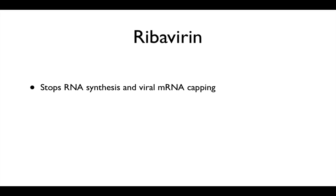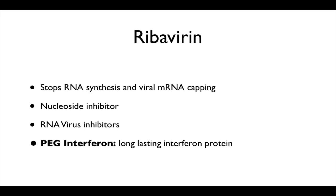For treatments, the key one to be aware of is ribavirin, which stops RNA synthesis and viral mRNA capping — it is a nucleoside inhibitor that inhibits RNA viruses. PEG interferon is also important: interferon is a protein the body makes naturally against viruses, working in fighting viruses and immunomodulation. Interferon has a very short half-life, but pegylation extends its duration so it can help fight the virus even better.